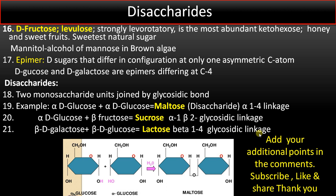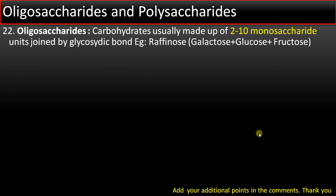Moving into oligosaccharides: oligosaccharides are carbohydrates usually made up of 2 to 10 monosaccharide units joined by glycosidic bonds. Raffinose is an example — a trisaccharide made up of galactose, glucose, and fructose.